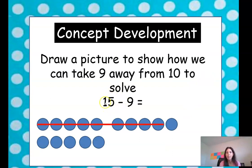This time we have 15. So we're going to draw 15 circles. And we're going to cross out 9 of them. And then we're going to see how many do we have left. 1, 2, 3, 4, 5, 6.